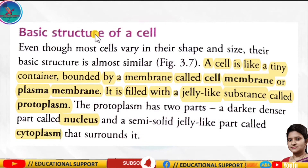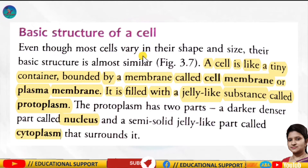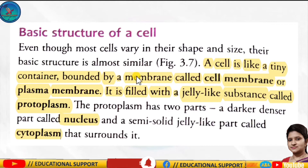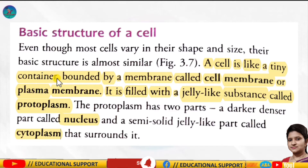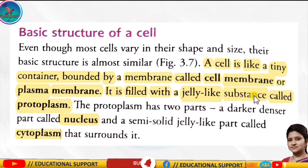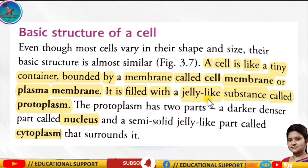Next we discuss the basic structure of a cell. Even though most cells vary in their shape, size, and number, their basic structure is similar. A cell is like a tiny container, bounded by a membrane called the cell membrane or the plasma membrane.